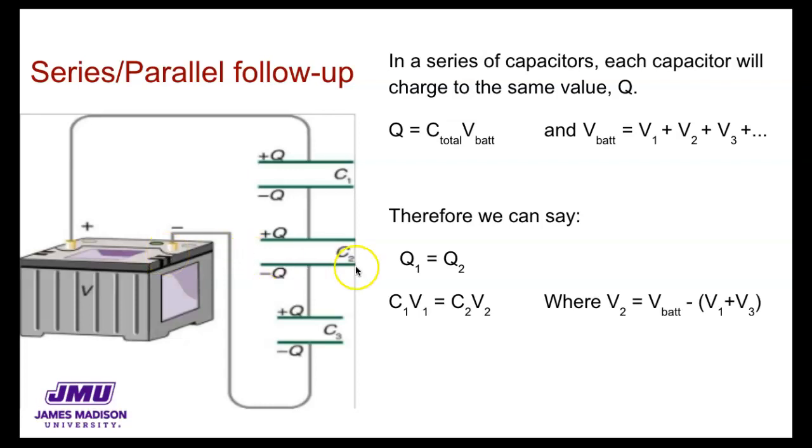So we want to emphasize the Q in series, Q1 equals Q2 equals Q3 equals Q4 for however many capacitors you have in series. And since the charge Q is equal to the capacitance times the voltage, that means capacitance 1 times voltage 1 equals capacitance 2 times voltage 2, etc., for however many capacitors you have in series.